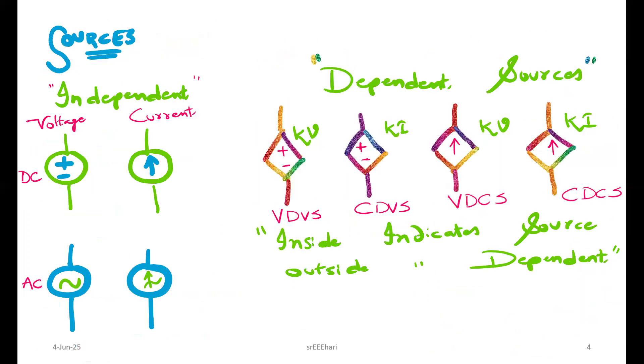These are the different sources: voltage source and current source are two independent. These are the independent voltage and current sources, and these are the dependent sources represented in diamond shape or rhombus shape.